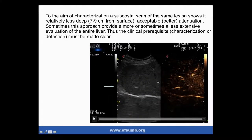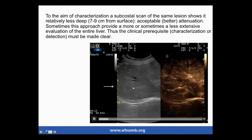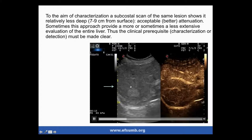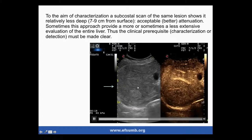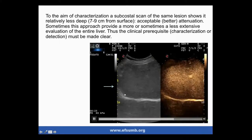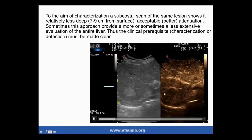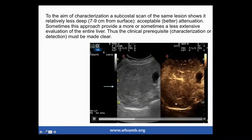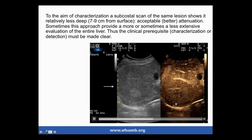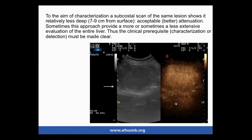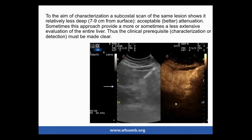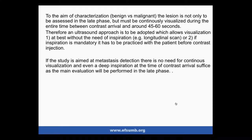The same patient requiring characterization was placed on the left decubitus and examined through a subcostal scan. Now the lesion is no longer ten to eleven centimeters from the transducer, but seven to nine centimeters - bringing it more superficial allowed better investigation of the arterial phase and confirmed the diagnosis. So to make the correct characterization, we must see the lesion well, which is a different requirement from staging a patient.